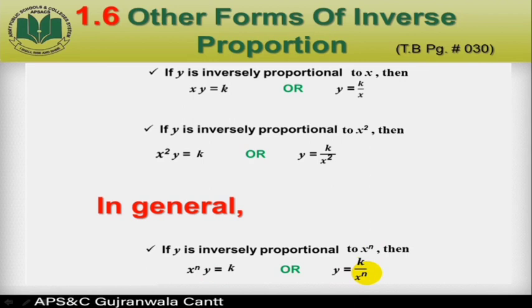In general, n can be any non-zero positive integer — this may be square, cube, square root, cube root, etc. The constant k can never be equal to zero in cases of inverse proportions or direct proportions.